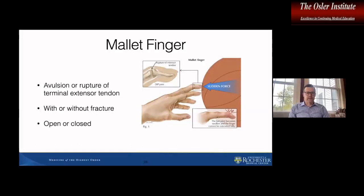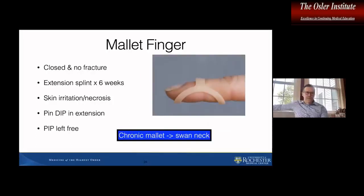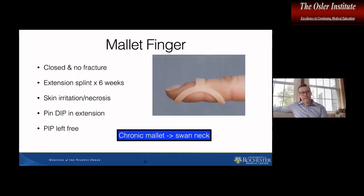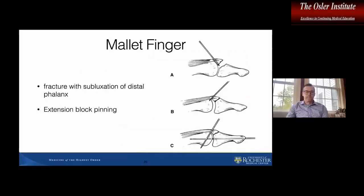A mallet finger is the forced flexion of an extended finger at the DIP joint. You can have a rupture or avulsion of the terminal extensor tendon — it can be with or without a fracture, and open or closed. If it is closed and there's no fracture, the primary treatment is an extension splint for a minimum of six weeks. The key thing is you leave the PIP free. Watch for skin irritation or necrosis on the dorsal aspect of the finger since the skin is quite thin there. They sometimes like to test that if you have a chronic untreated mallet finger, based on the chronic change in relative tension of the flexors and extensors, you can end up with a swan neck deformity.